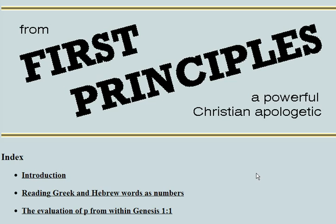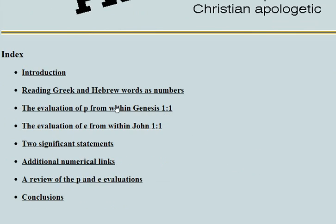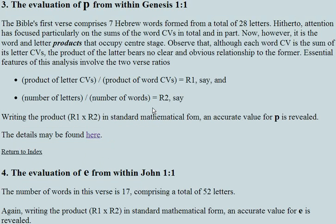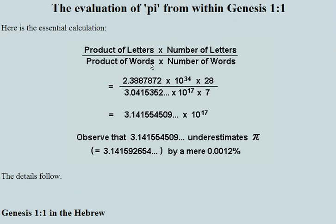First principles — a powerful Christian apologetic. What we're going to be doing is evaluating pi from within Genesis 1:1 and evaluating e from within John 1:1. These are two mathematical constants — they are transcendental numbers, they are irrational numbers, and they are non-repeating numbers. They are special numbers in mathematics.